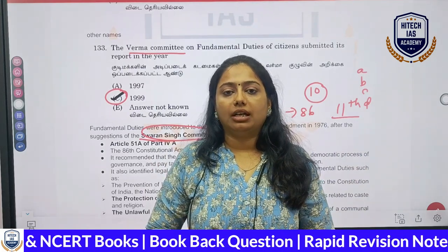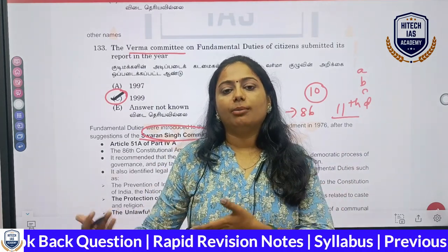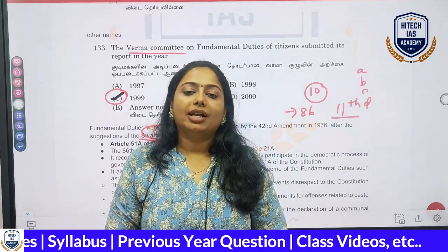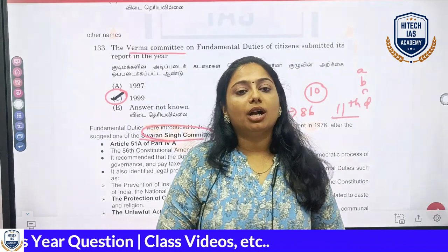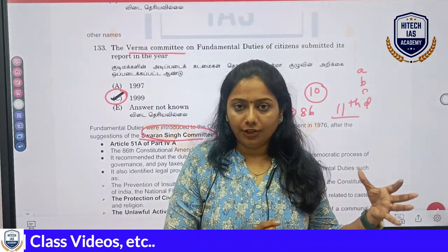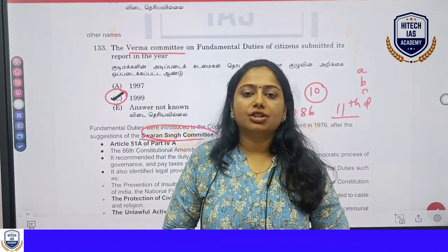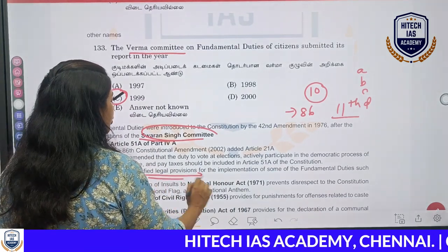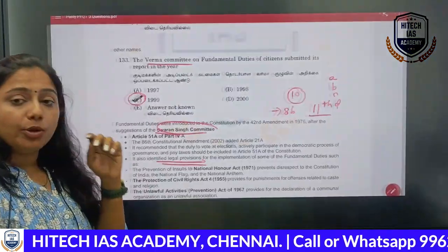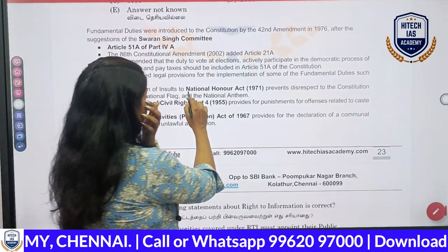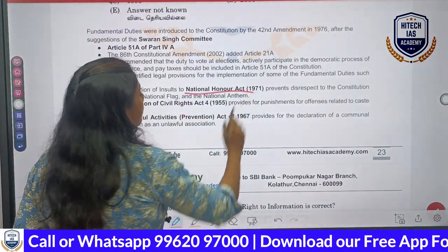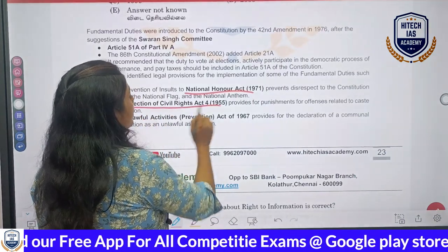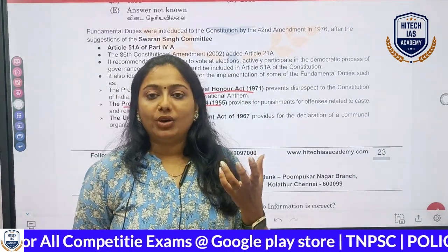This is a democratic country, and that is why there is a government. In 1999, the Verma Committee said in court that if you need any changes, they should make legal provisions. There are 3 acts: the National Honor Act 1971, what is the act? The National Anthem case falls under this. Also, the Protection of Civil Rights Act 1955 — civil rights provisions have been provided.